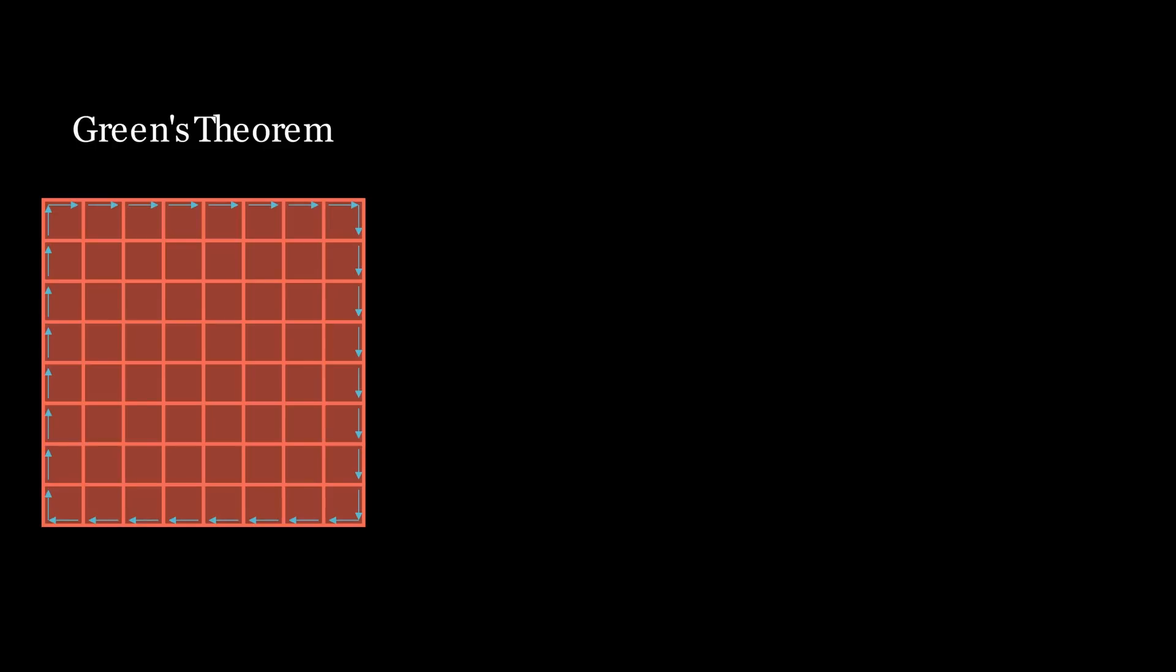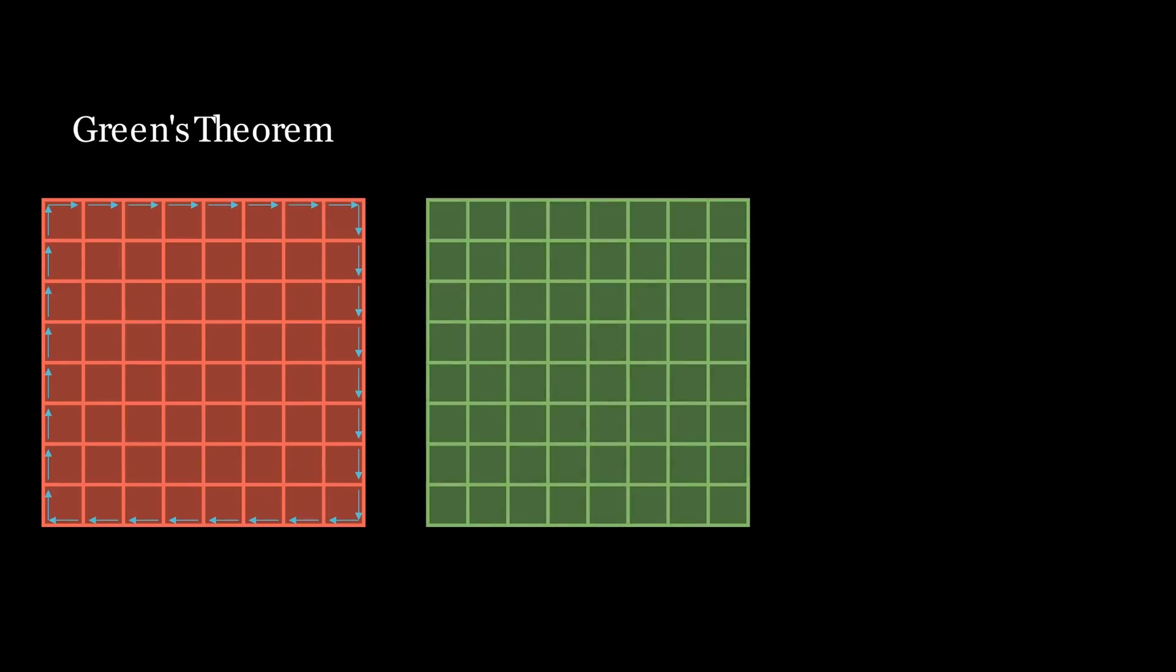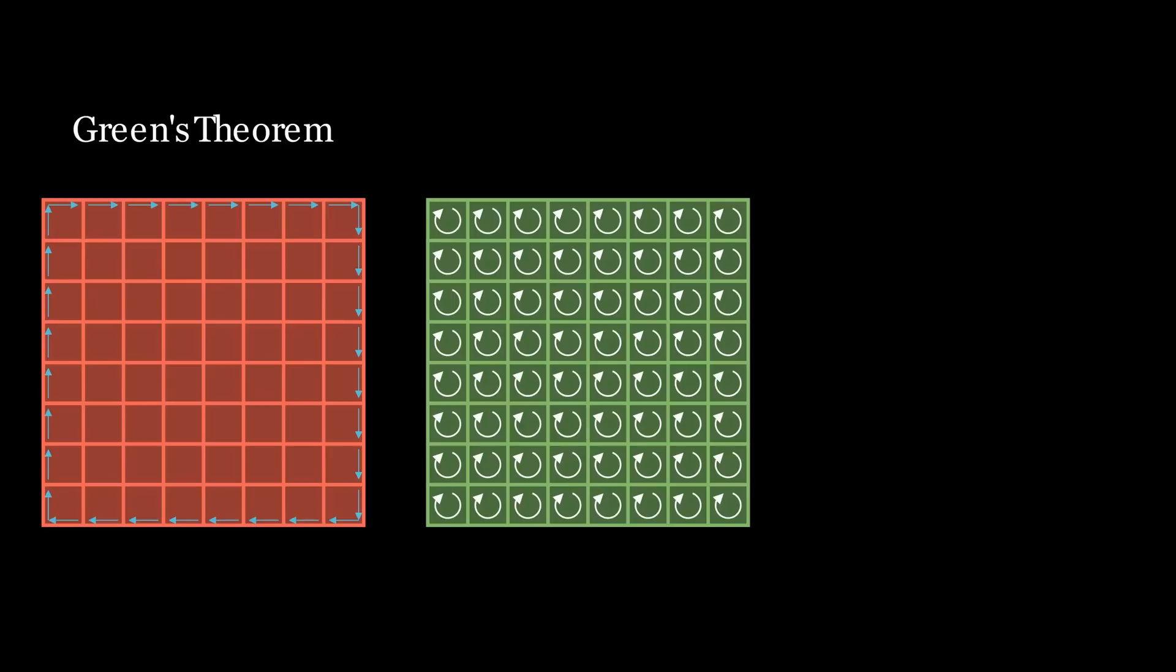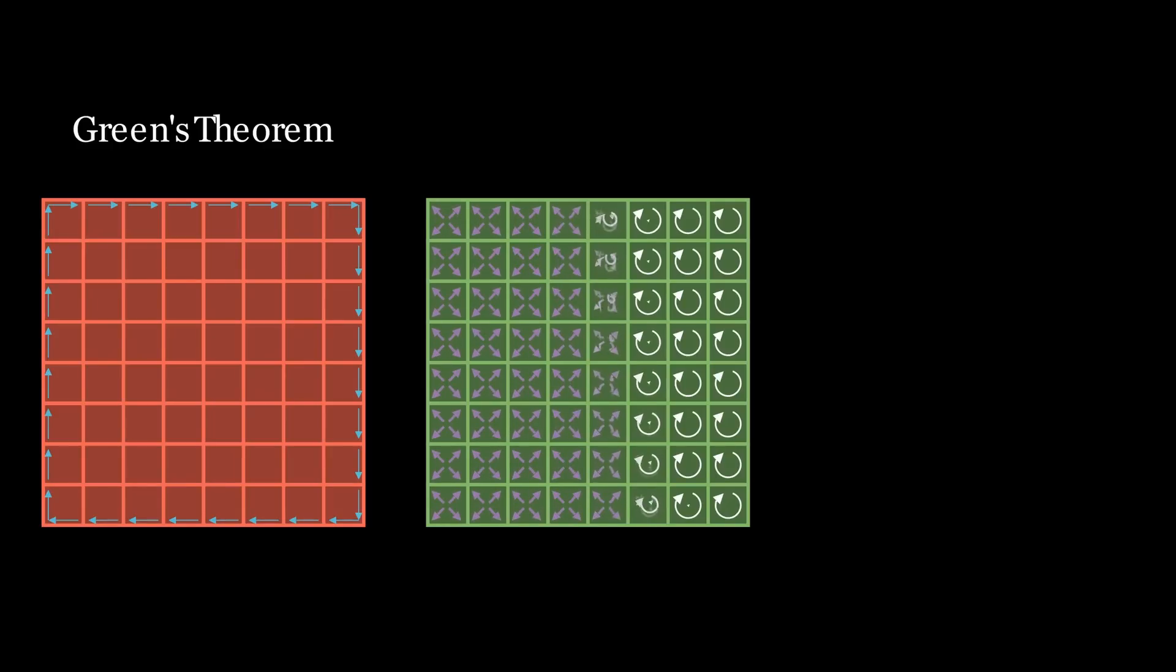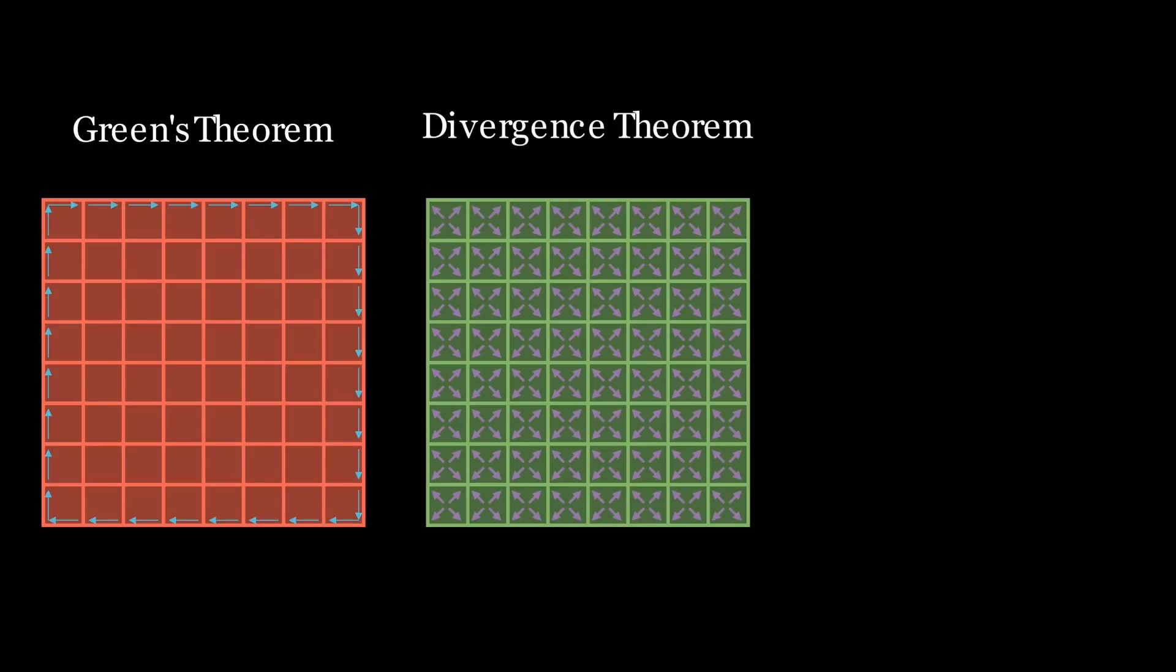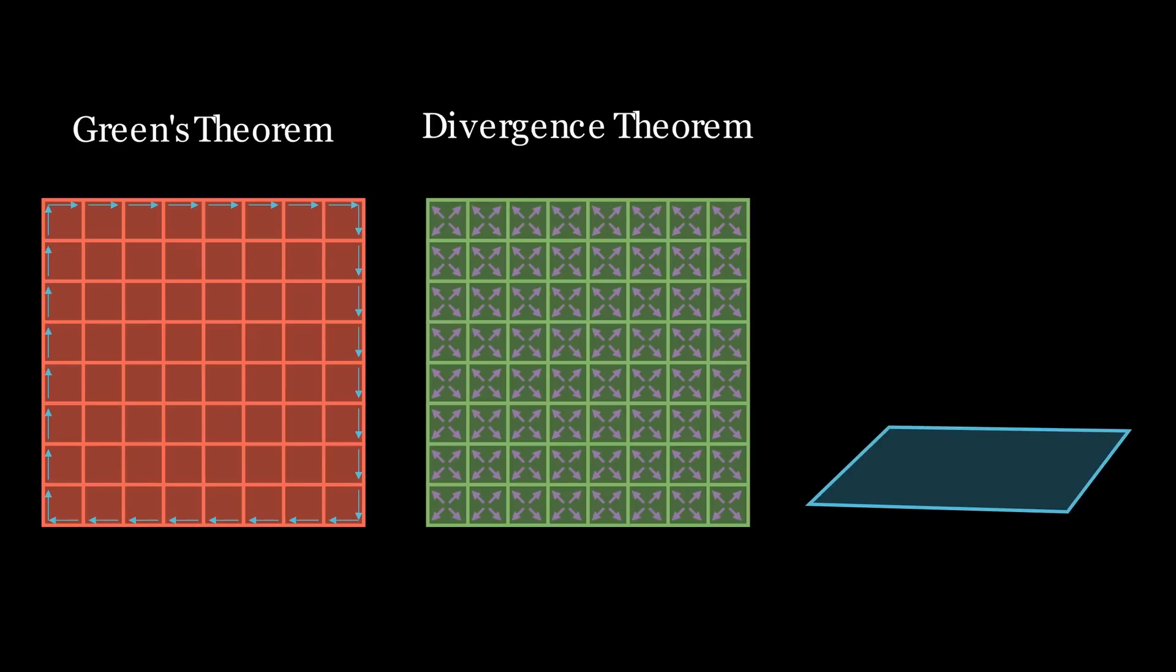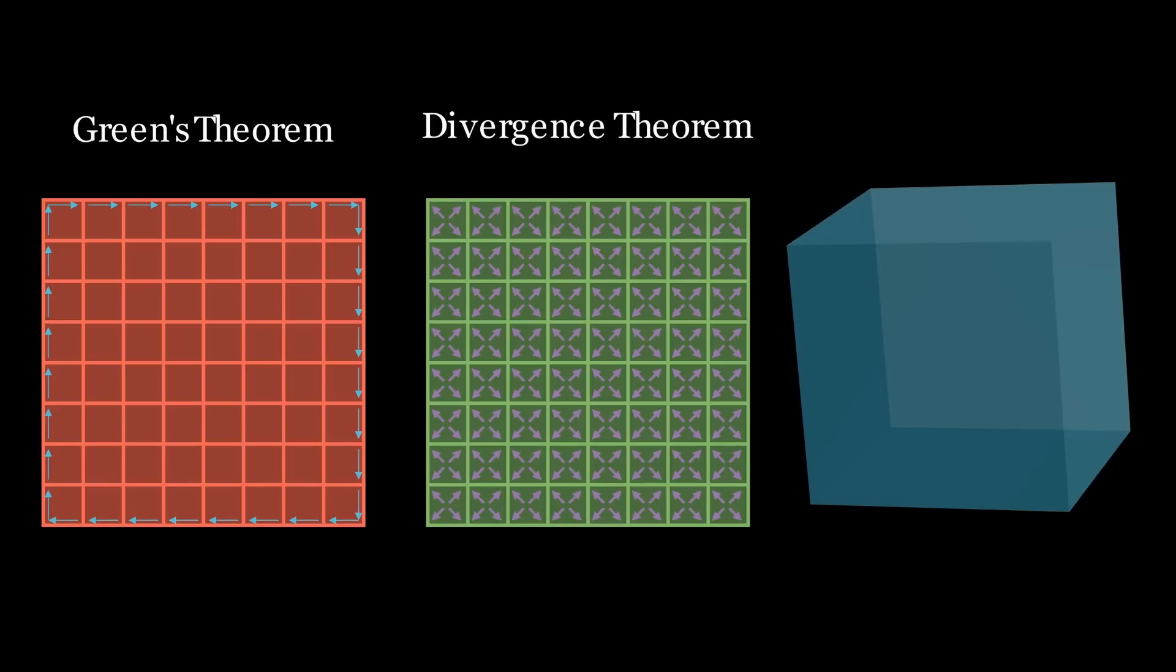Green's theorem is just one of many theorems in calculus that use this concept. There are plenty of others also derived from the fundamental theorem of calculus. One of them is Gauss's divergence theorem, which uses divergence instead of curl. So instead of being whirlpools, we imagine each little square as either a water pump or a sink, which either absorbs or produces water. Stokes' theorem is similar to these theorems, but instead of integrating over a flat surface, we integrate over one in 3D.